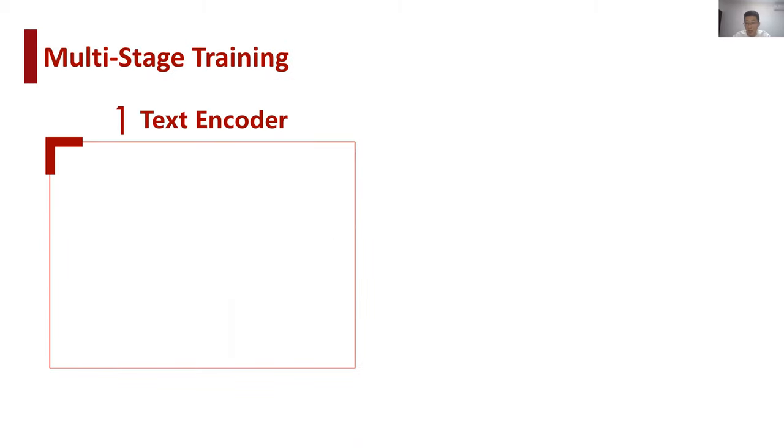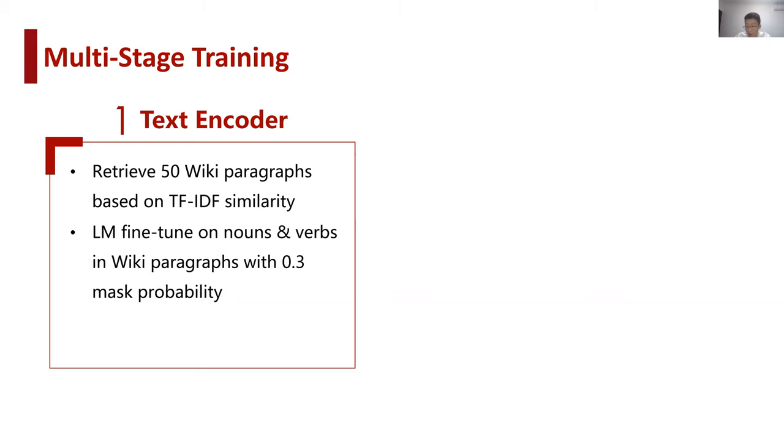As we mentioned before, we try to collect additional procedural text documents from Wikipedia to remedy data inefficiency. Inspired by the strong performance of pre-trained BERT models on either open domain or in-domain data, we adopt a multi-stage training schema for the text encoder in our model. First, we split wiki documents into paragraphs. Second, we use a TF-IDF ranker to retrieve top 50 wiki paragraphs that are most similar to the given paragraph. Then we perform self-supervised language model fine-tuning based on a mask language modeling objective.